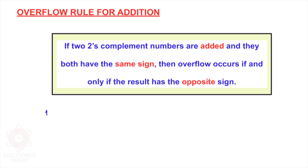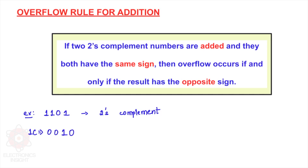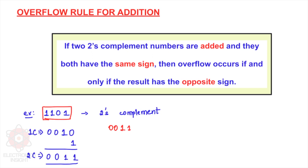To represent a given binary number — for example, 1101 — in two's complement, we first take the one's complement by negating each bit, giving 0010. Then we add one more to get the two's complement, which gives 0011. So the two's complement of 1101 is 0011.